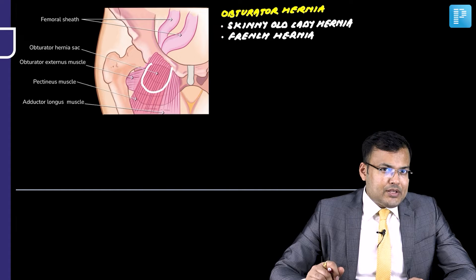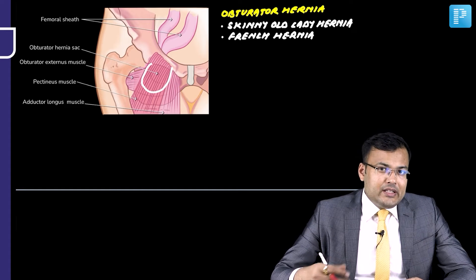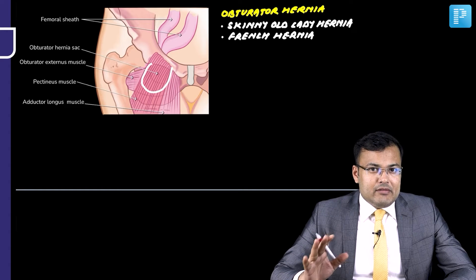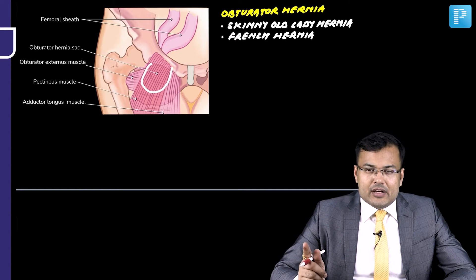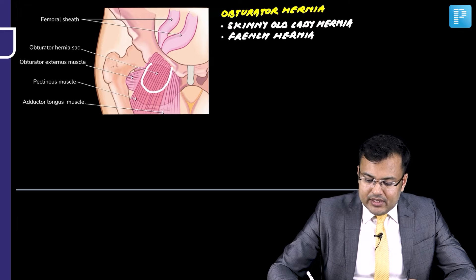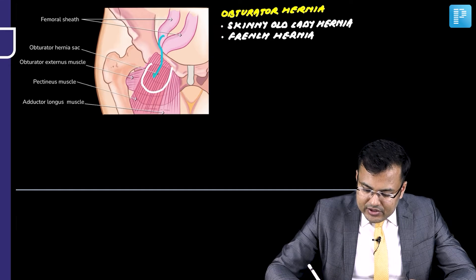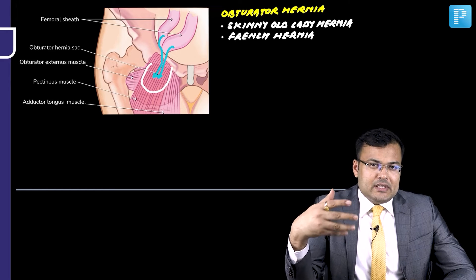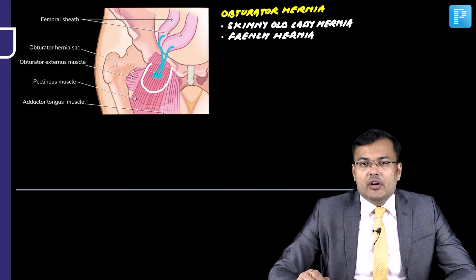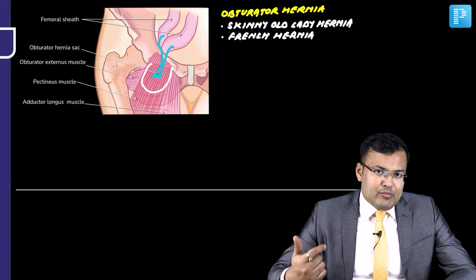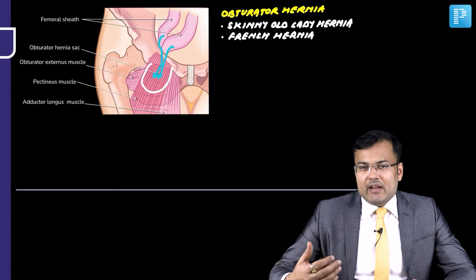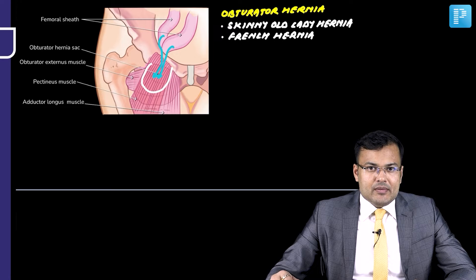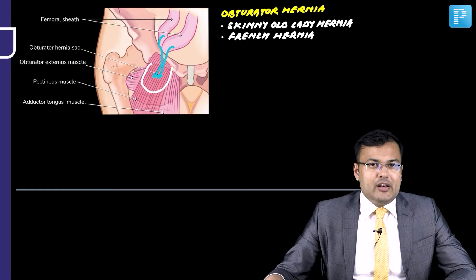Whenever patients have loss of fat, laxity of ligaments, or increased intra-abdominal pressure, there is herniation of the small bowel. In this image, you can see herniation of the small bowel into the obturator canal, which is going to compress the obturator nerve. Whenever there is compression of the obturator nerve, these patients will have pain along the inner aspect of the thigh radiating to the ipsilateral knee joint. This is the presentation in obturator hernia.